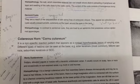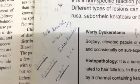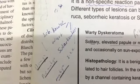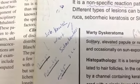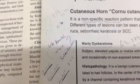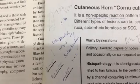A note about cutaneous horn: it is a non-specific reaction pattern appearing as a conical hyperkeratotic lesion of various sizes, and different types of lesions can be seen at its base — benign lesions like seborrheic keratosis or wart, premalignant solar keratosis, or malignant squamous cell carcinoma.